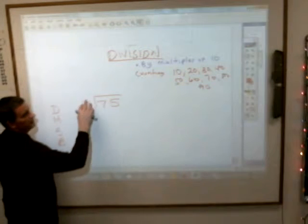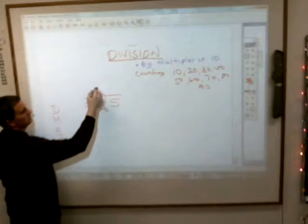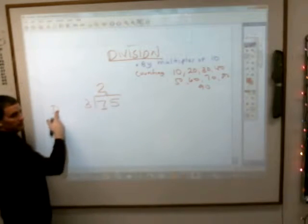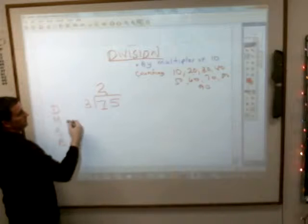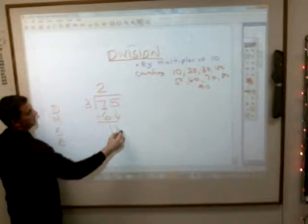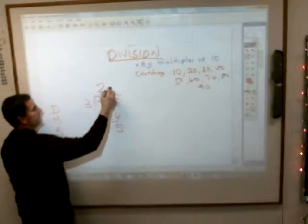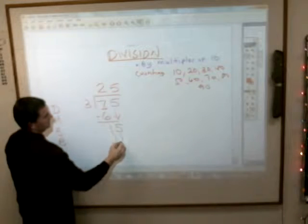And when you did this one here, it was, how many times does 3 go into 7? Two times, that's the division part. Two times 3, that's the multiplication part. The subtraction part, the little arrow with the bring down part. And then how many times does 3 go into 15? 5. Okay, so my answer is 25.